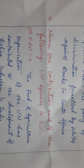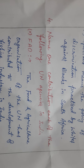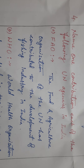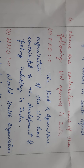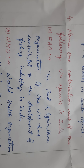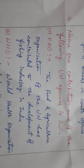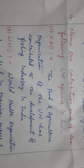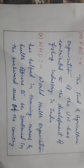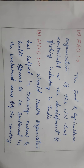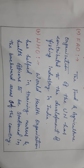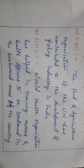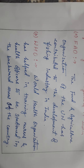Question number 4: Name one contribution each of the following UN agencies in India. First, FAO — the Food and Agriculture Organization of the UN has contributed to the development of the fishing industry in India. WHO — the World Health Organization has helped in training nurses and health officers to be stationed in the backward areas of the country.